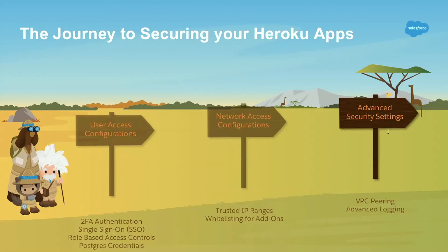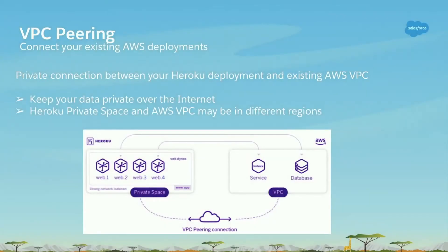We also offer VPC peering. The Heroku private space has an underlying Amazon VPC, and if you already have one outside of Heroku or your architecture requires it, you can create a one-to-one secure connection between that VPC and your private space. It can even do this across regions if you need to.